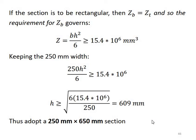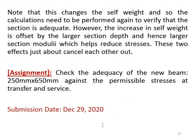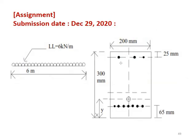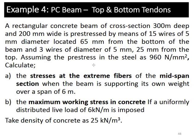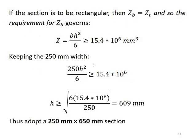In the solution, if the cross-section dimension b is set equal to some value, the corresponding depth d is found. The cross-section that satisfies the requirements is selected. Thank you for watching this video on Prestressed Concrete Chapter 4. Please subscribe to the channel.